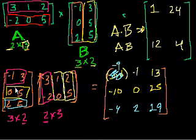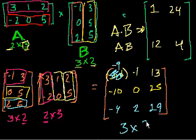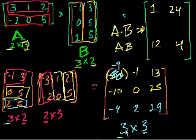So there you have it. Multiplying the 3 by 2 matrix times the 2 by 3 matrix, we got a 3 by 3 matrix. That 3 by 3 came from the 3 rows of the first matrix and the 3 columns of the second matrix — which makes sense, since row information comes from the first matrix and column information from the second.